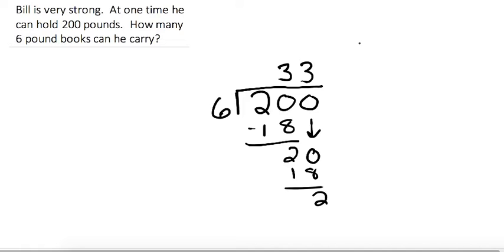So we could say 33 remainder 2. We could say 33 and 2/6, which actually equals 33 and 1/3.